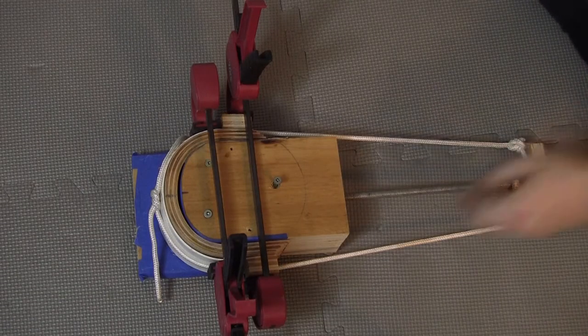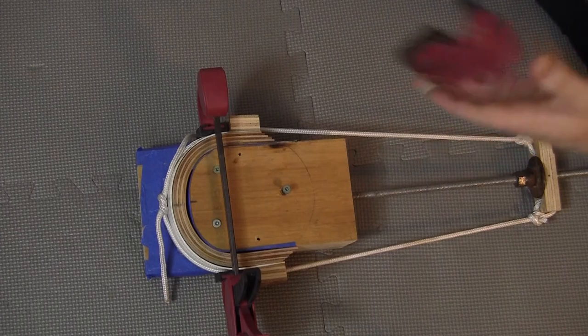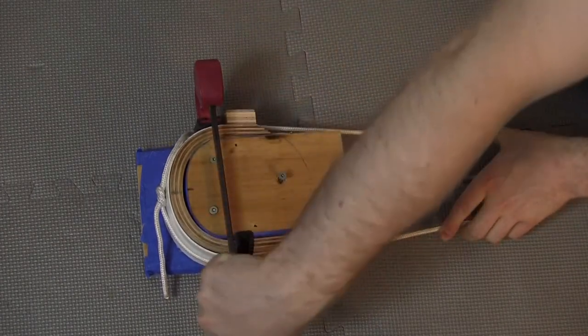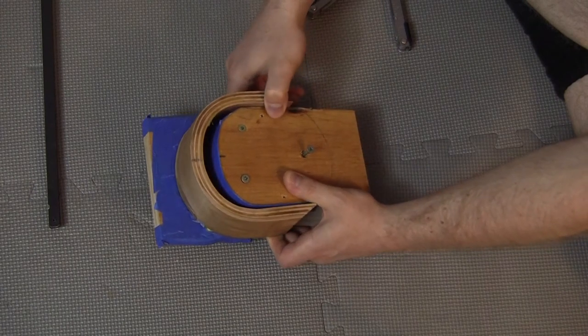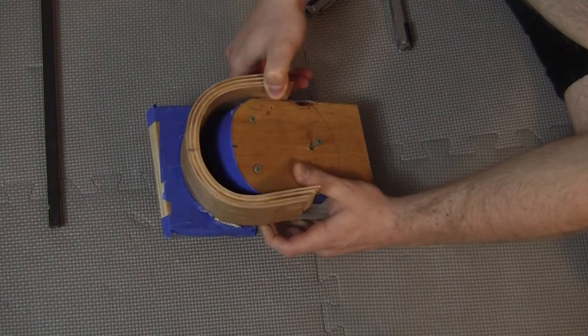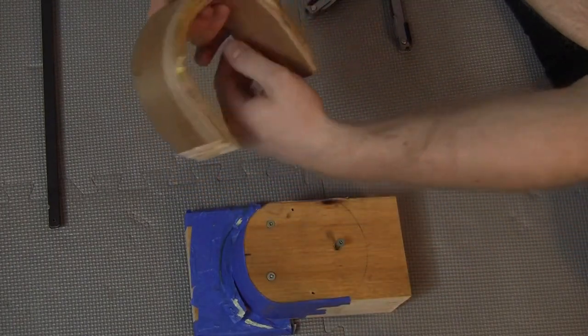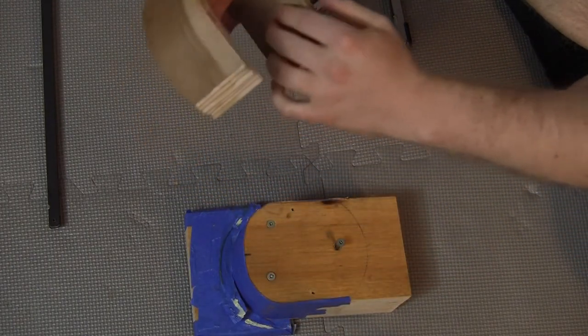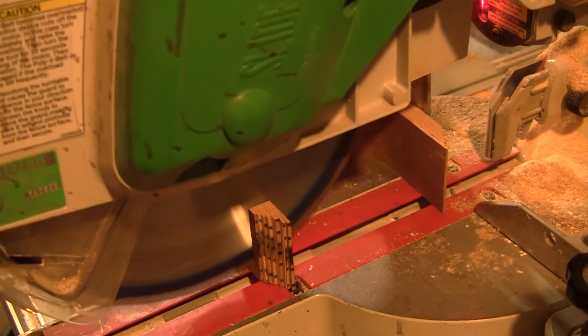Two days later, once the glue was dry, it was time to remove the bow from the jig. Now, this was quite satisfying, although some of the glue still hadn't dried. Once it was fully dried, the bow was trimmed, and it was time to move on to the assembly.